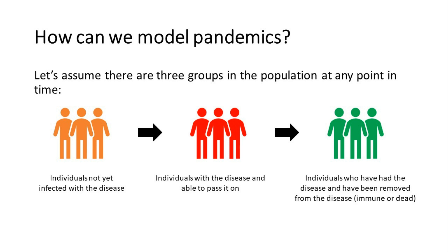In an SIR model, we assume there are three different groups in the population at any point in time. First, there are individuals who are not yet infected with the disease — they've not been infected yet and they're not immune, so they're susceptible to being infected. Then we've got individuals with the disease — they're infected and infectious, and can pass it on to the susceptible.